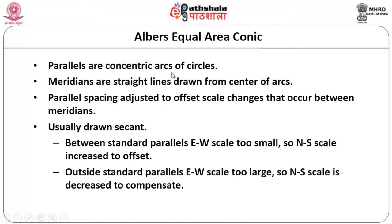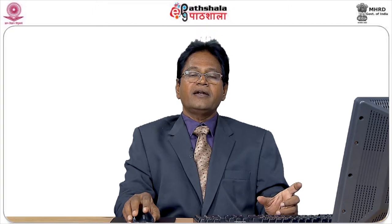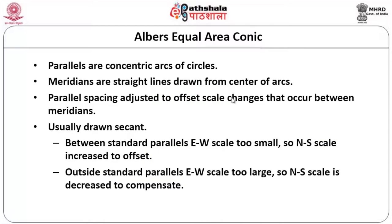Albers equal area conical projection: in this case it is equal area, meaning the area should not be affected in any part of the map. Again here, parallels are concentric arcs of circles, and meridians are straight lines drawn from the center of each arc. There will not be any error in that, and the parallel spacing is also adjusted to offset the scale changes that occur between the meridians.